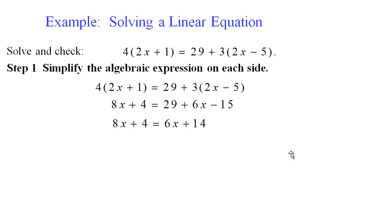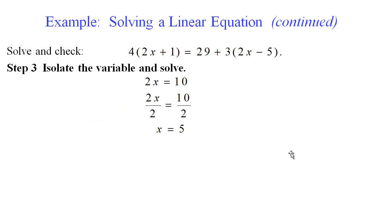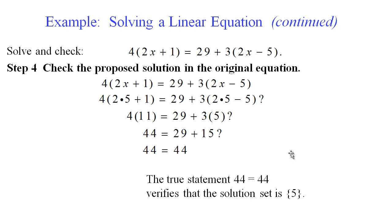Here is another example. We distribute first, combine like terms, then isolate the variable by bringing 6x over so it stays positive and moving the constant to the other side. We get 2x equals 10, so x equals 5. Plugging 5 back into the original equation confirms it is correct.